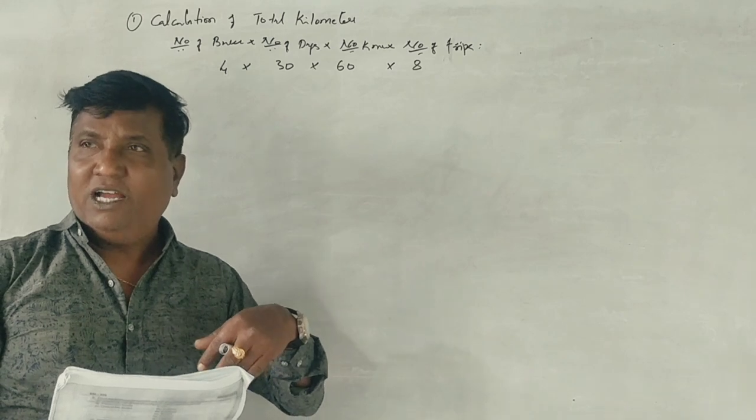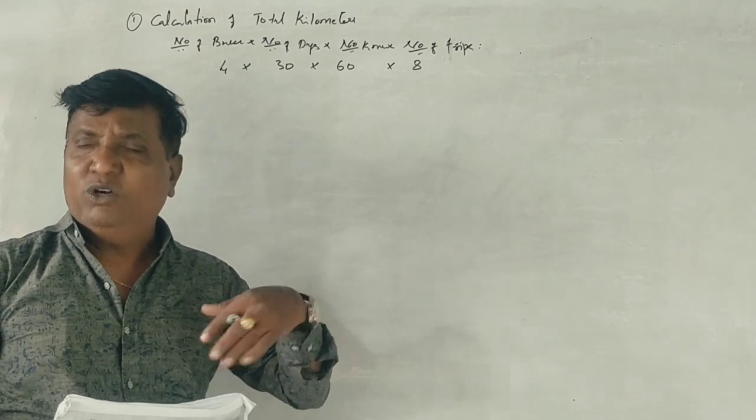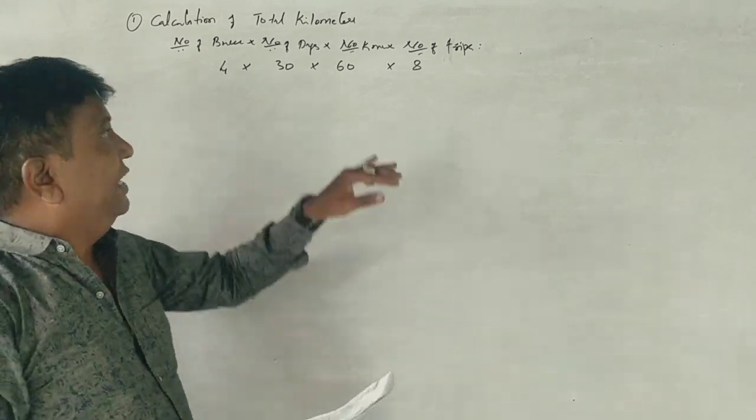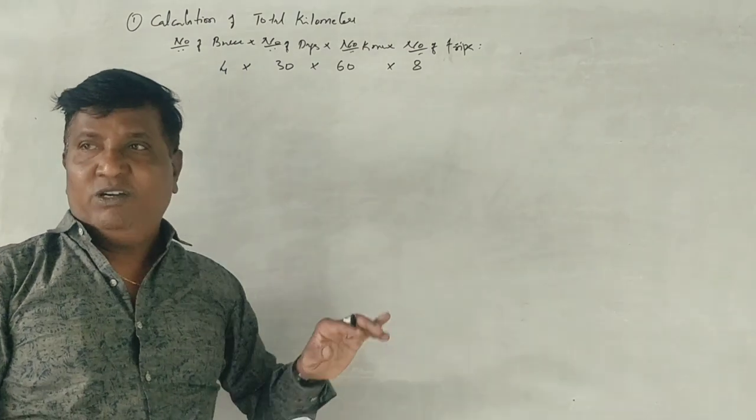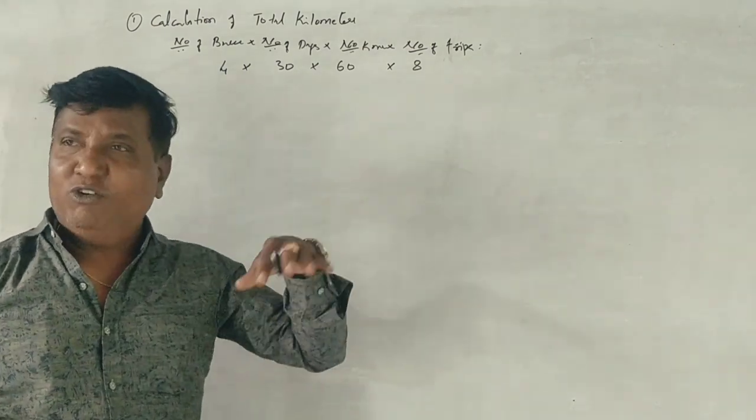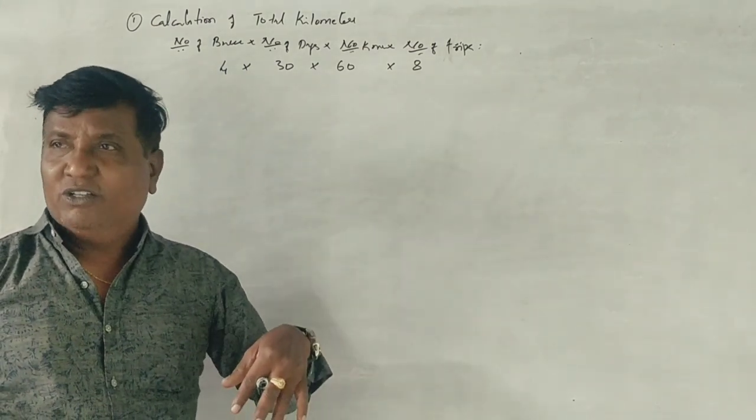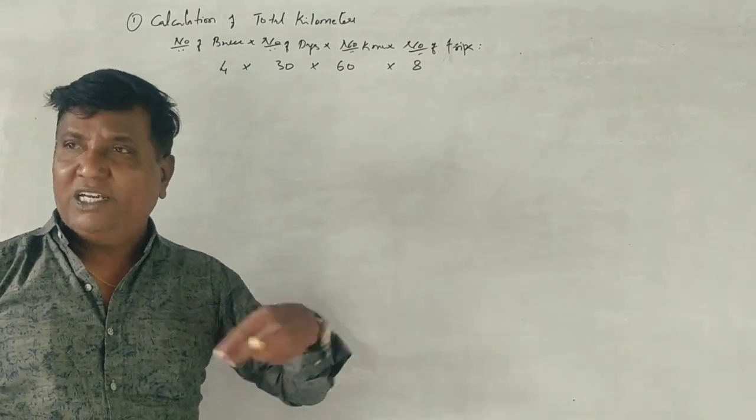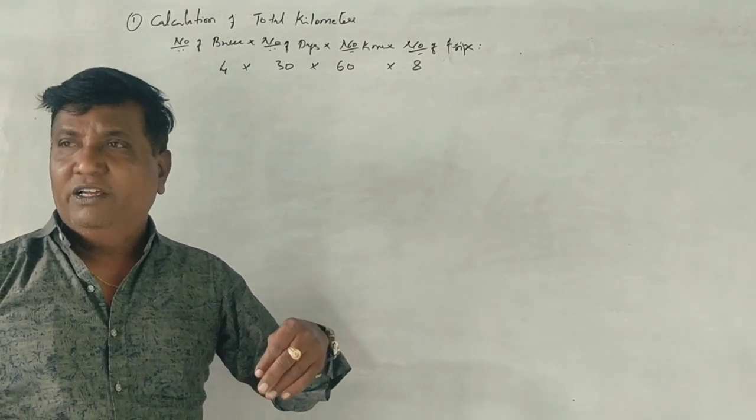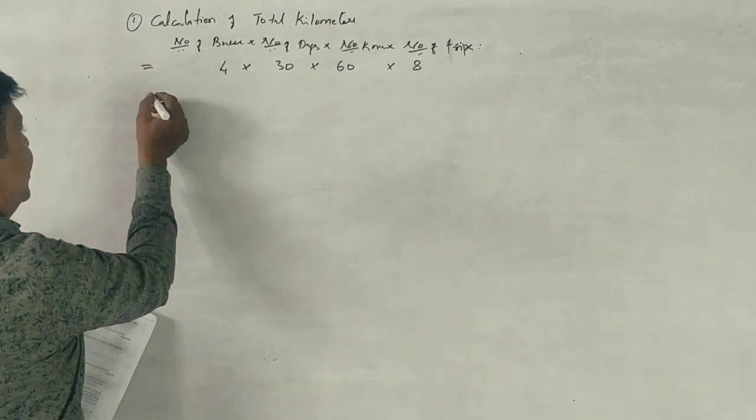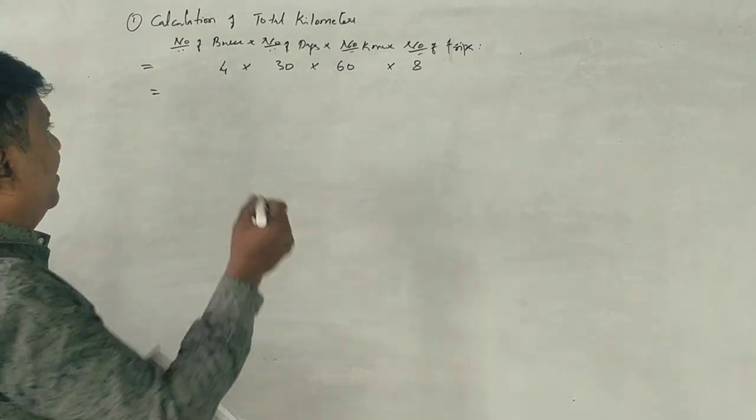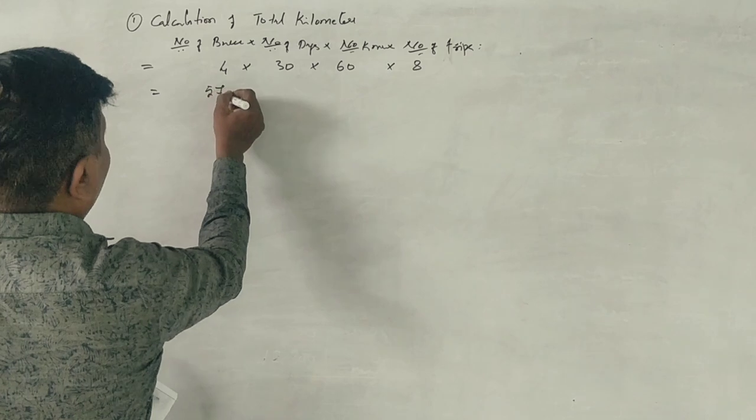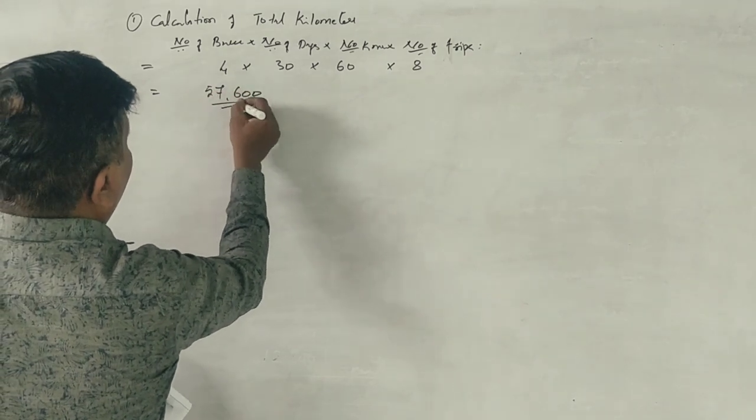One time on the onward and one trip on the return, so one trip. So you know, it's a round trip. Yes! Okay. 57,600 KM. Clear?